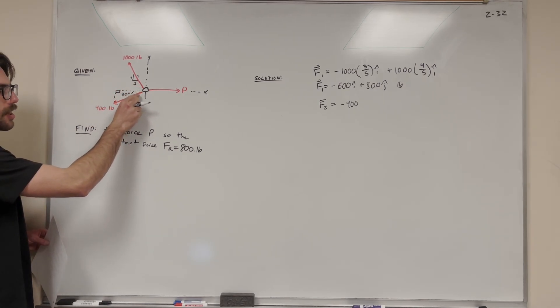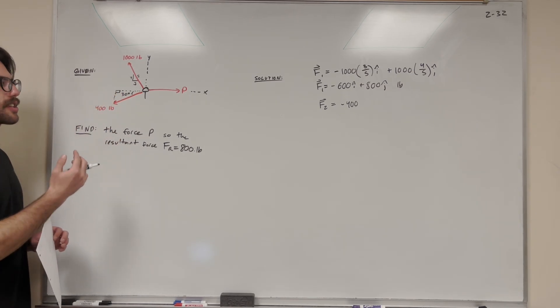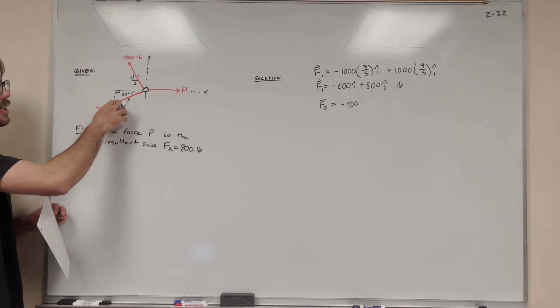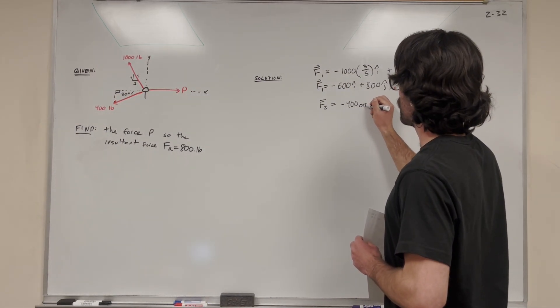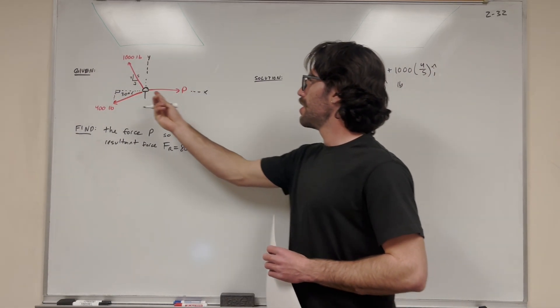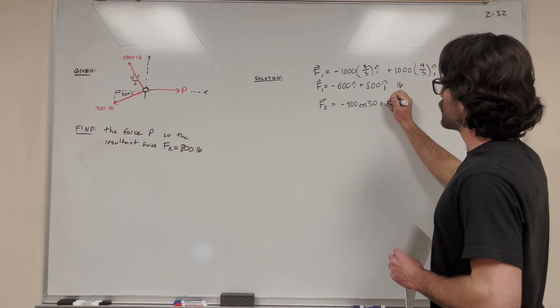Remember SOHCAHTOA. If we're looking for adjacent, we use cosine, because cosine is adjacent over hypotenuse. Cosine 30 gives us a ratio of the x component to the hypotenuse. So we attach a cosine of 30 to get the i component.